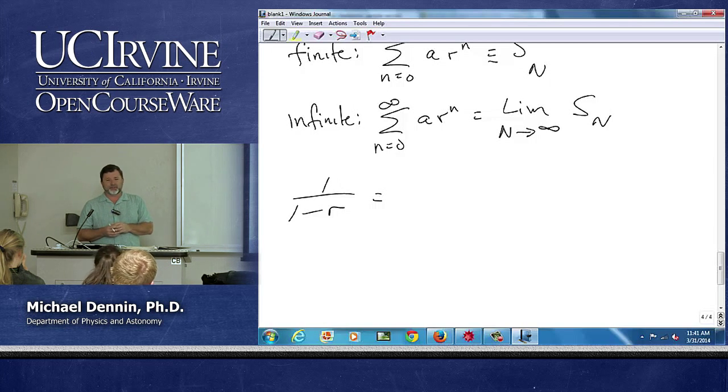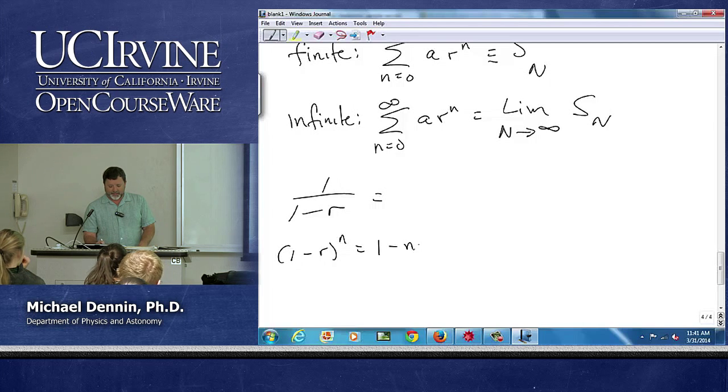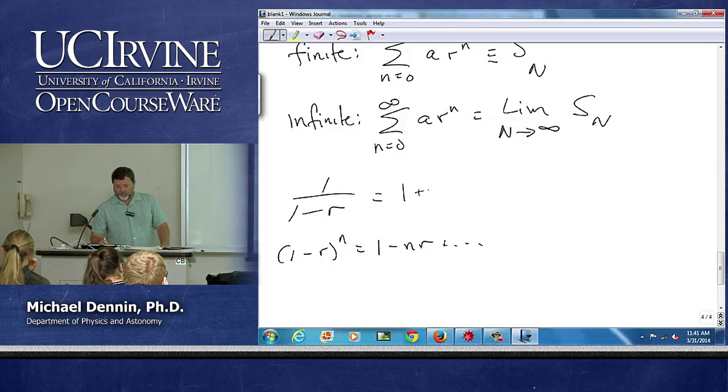Because one minus r to the n starts out as one minus nr plus dot dot dot. So since this is one minus r to the minus n, we start out as one plus r. If you go back and review, it's just all the terms.